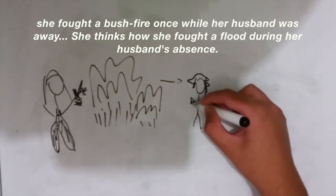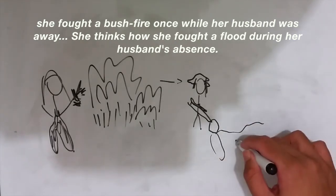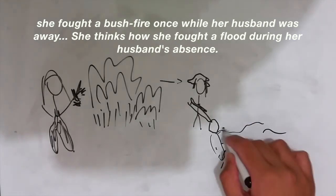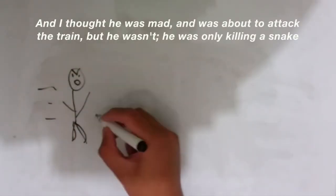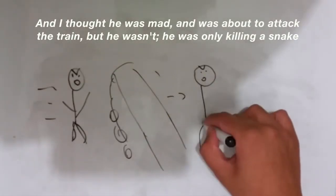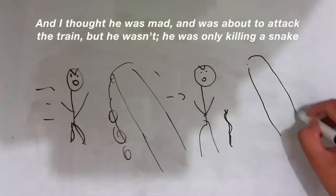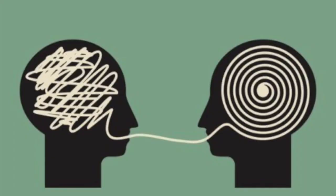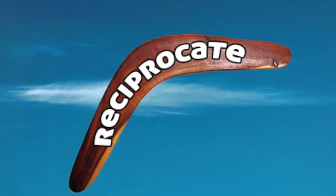We see the drover's wife battling the elements and taking matters into her own hands, since these are things that her husband would be doing. And: 'I thought he was mad and was about to attack the train, but he wasn't — he was only killing a snake.' We see the misunderstanding of the narrator and the nature of the action the man undertook to put himself out of danger from the snake.